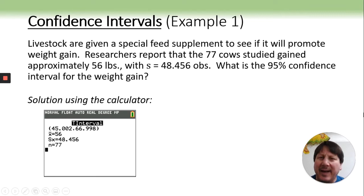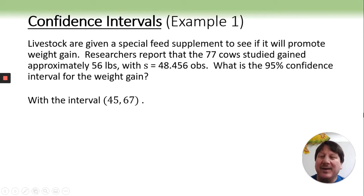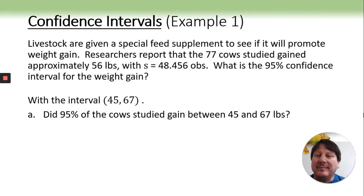Calculating the interval is not the thing. It's what does that mean? So with our interval, which by the way is the same interval we got before, 56 minus 11 is 45, 56 plus 11 is 67. Did 95% of the cows studied gain between 45 and 67 pounds? Is that what that means?